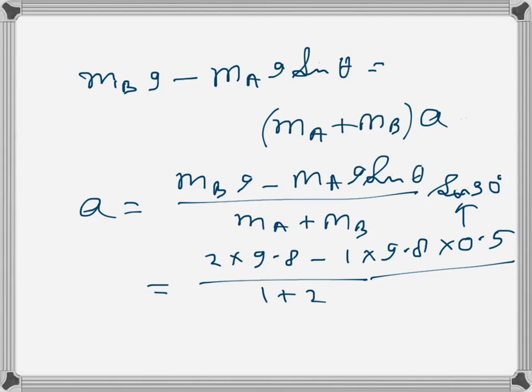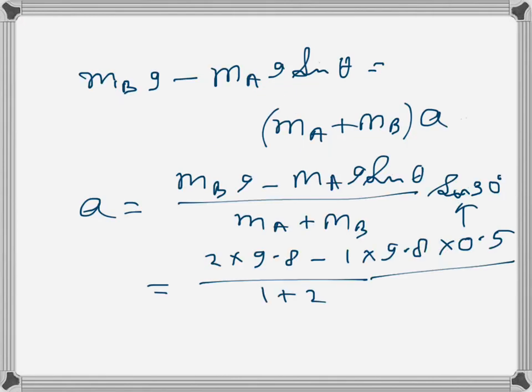So basically on top is 1.5 into 9.8 and in the bottom is 3. So that is a, this is becoming 4.9 meters per second squared. So that's the acceleration with which both the masses will move.